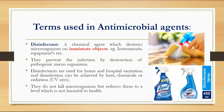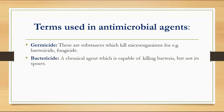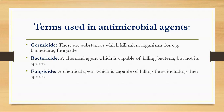Disinfectants do not kill microorganisms but they reduce them to a level which is not harmful to health. Germicides are substances which kill microorganisms. For example, they may be either bactericide or fungicide. Bactericide is a chemical agent capable of killing bacteria but not its spores, whereas fungicide is a chemical agent capable of killing fungi including their spores.